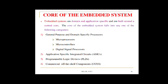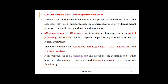General purpose and domain specific processors include microprocessors, microcontrollers, and digital signal processors. Almost 80% of embedded systems are processor or controller based. The processor may be a microprocessor, microcontroller, or DSP depending on the domain and application. A microprocessor is a silicon chip representing the central processing unit, capable of performing arithmetic and logic operations. The CPU contains the ALU, control unit, and working registers.